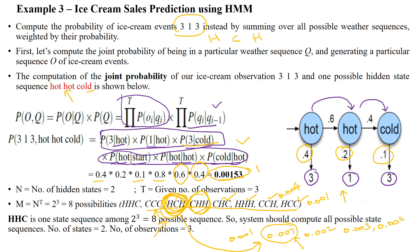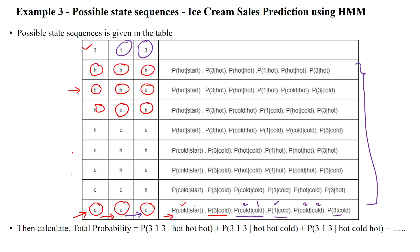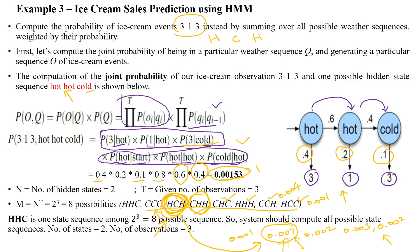That is how we use the Hidden Markov Model. But to compute every state sequence, it will take more time for calculation. To find the total probability, we add all eight sequence values. Due to the time it takes to calculate the state sequence values for all possibilities, there are two algorithms — the Forward Algorithm and another algorithm — which will reduce the time to calculate the state sequences. We will see that in the next video.